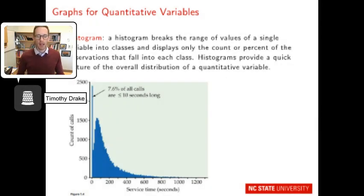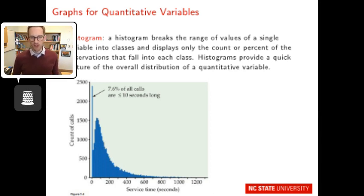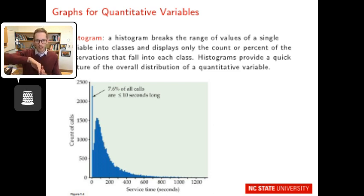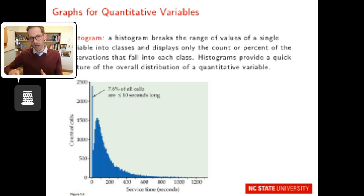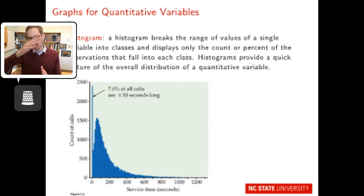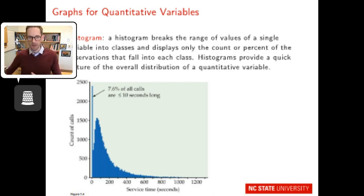Here's an example from your book showing service time in seconds. You can see that 7.6% of all calls are less than 10 seconds long, creating a large spike. It then comes down and follows a right skew — a positive skew — where service time dwindles along the x-axis. You can see that positive or right skew with respect to these calls.